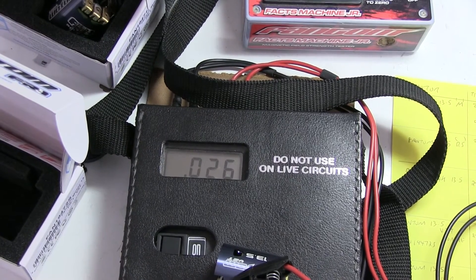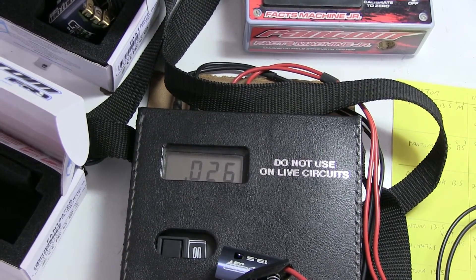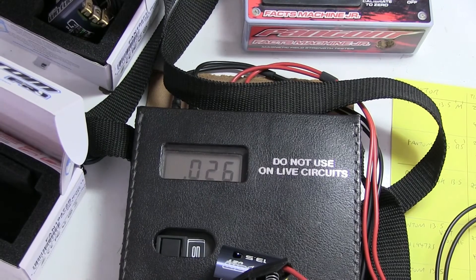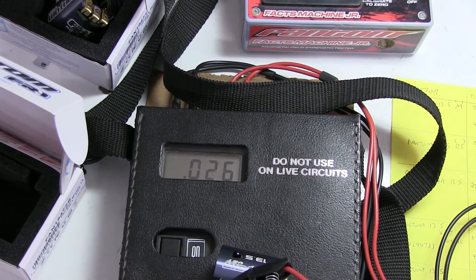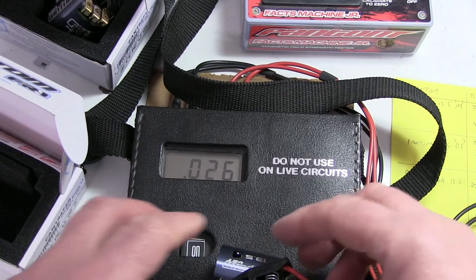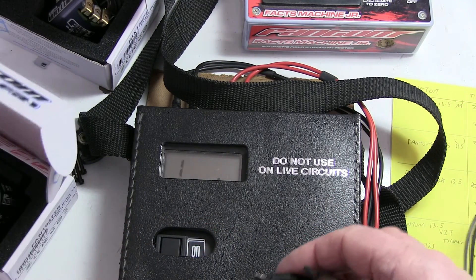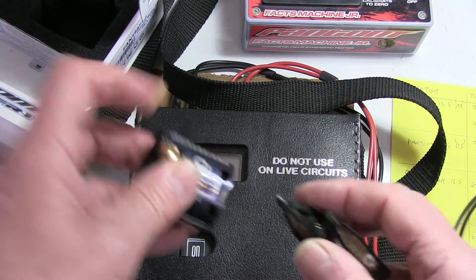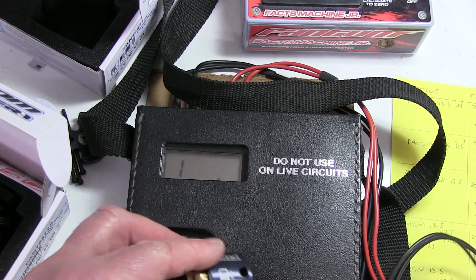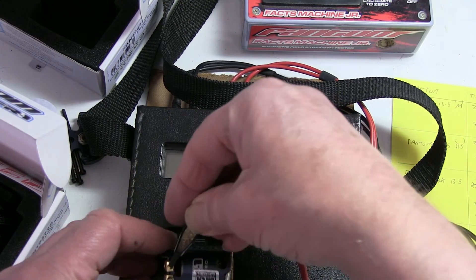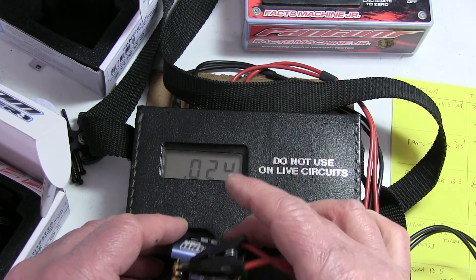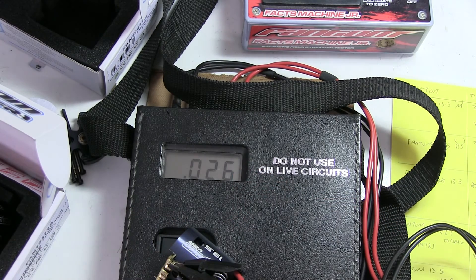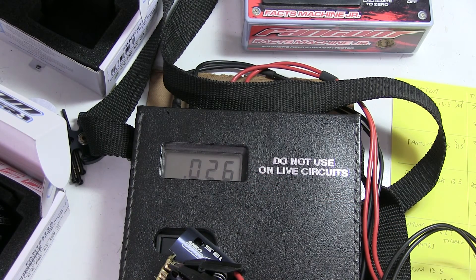The resistance of the stator coil on the v2t: 0.026. And on the R: also 0.026.